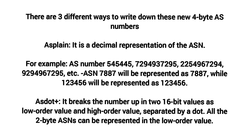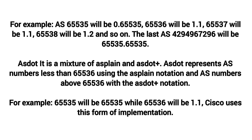AS Dot Plus breaks the number up into 16-bit values as a low-order value and high-order value separated by a dot. All two-byte ASNs can be represented in the low-order value. For example, AS 65535 will be 0.65535, 65536 will be 1.0, 65537 will be 1.1, 65538 will be 1.2, and so on.